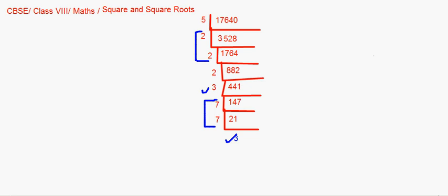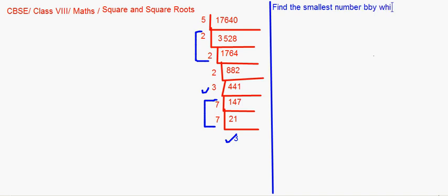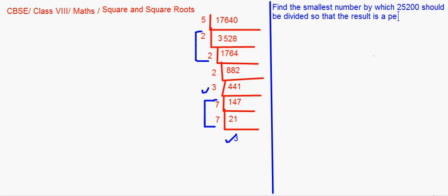You might come across questions that are not as direct. Here's one: find the smallest number by which 25200 should be divided so that the result is a perfect square. This tells us 25200 is not a perfect square, and we need to find what to divide it by.